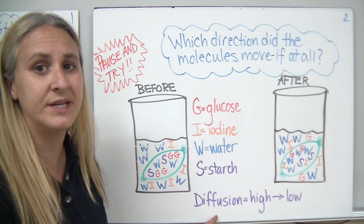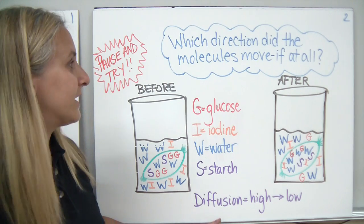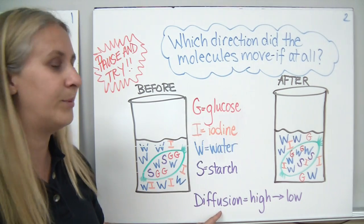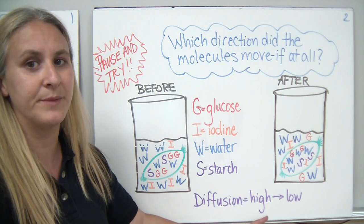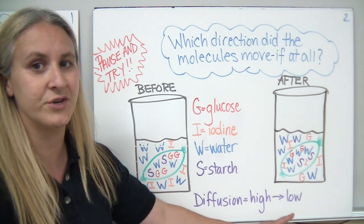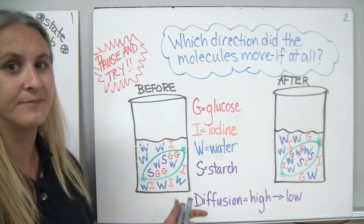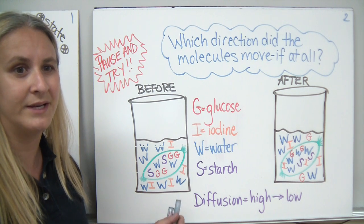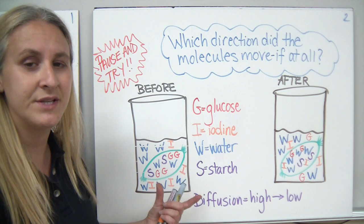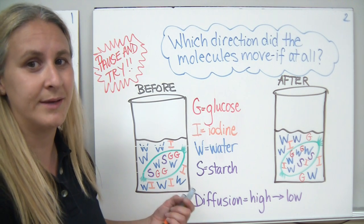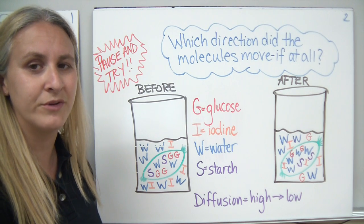Once the experiment took place, we were looking to see which substances were actually able to move by diffusion, if any at all. Remember, diffusion moves from an area of greater or high concentration to an area of lower or lesser concentration without the use of energy. This wasn't a living cell, so there was no energy available — if molecules were going to move, they were only moving by diffusion.